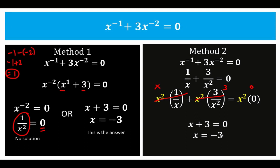So we have the same answer: x equals negative 3. Comparing the two methods, in my experience I find the second method easier to use, and so we are going to use this second method to answer our second problem.